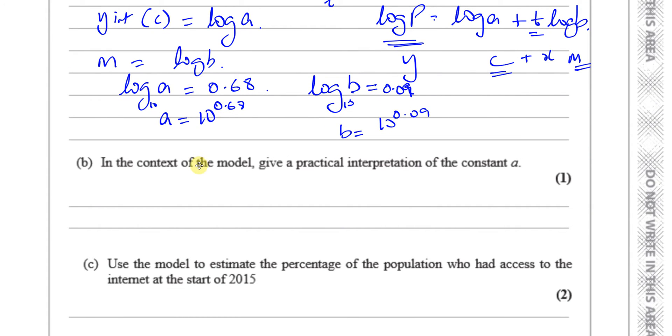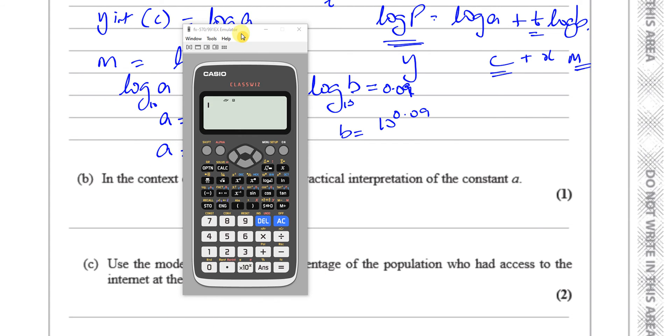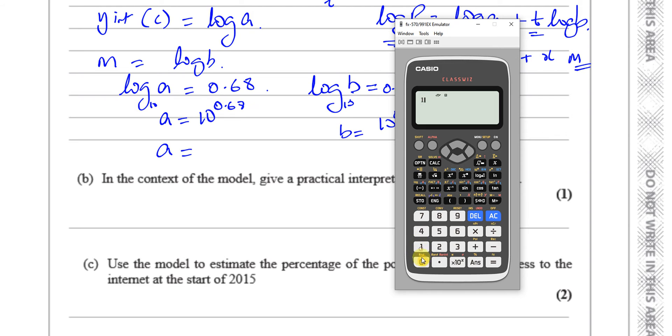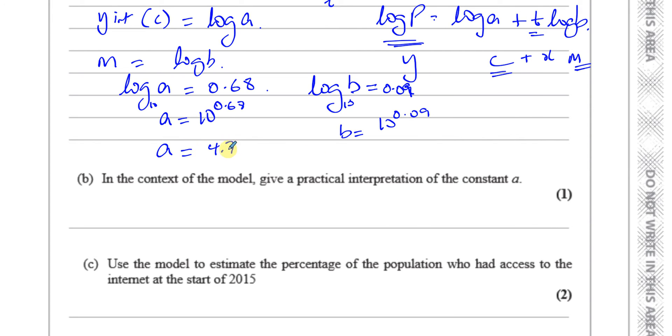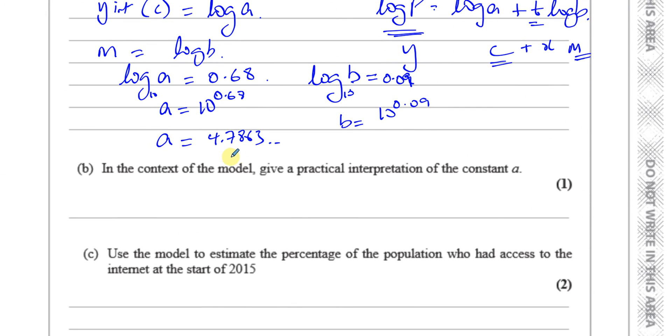So we have A equals 10 to the power of 0.68, which gives you 4.786. They want it to two decimal places, so that's A is equal to 4.79.